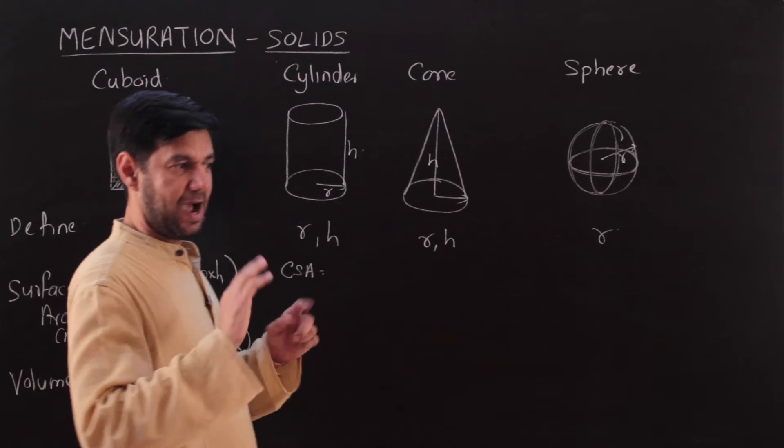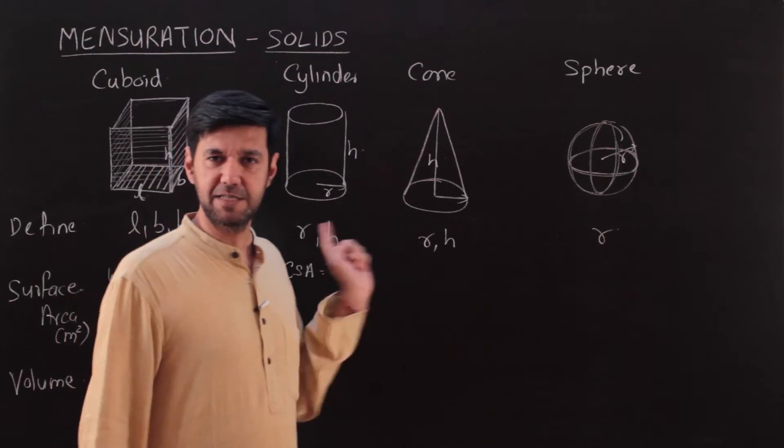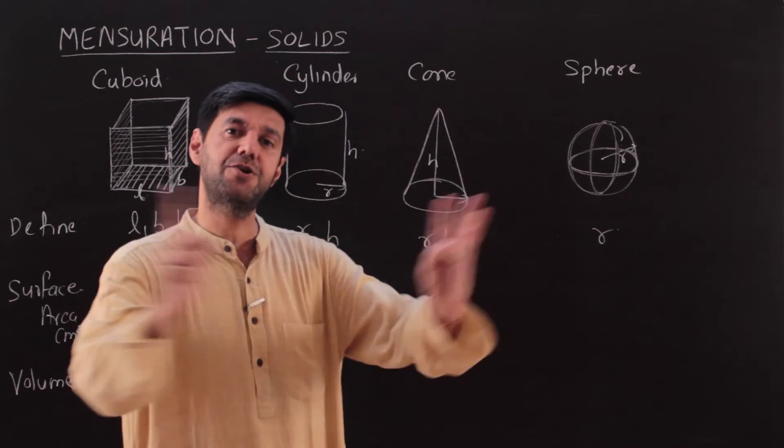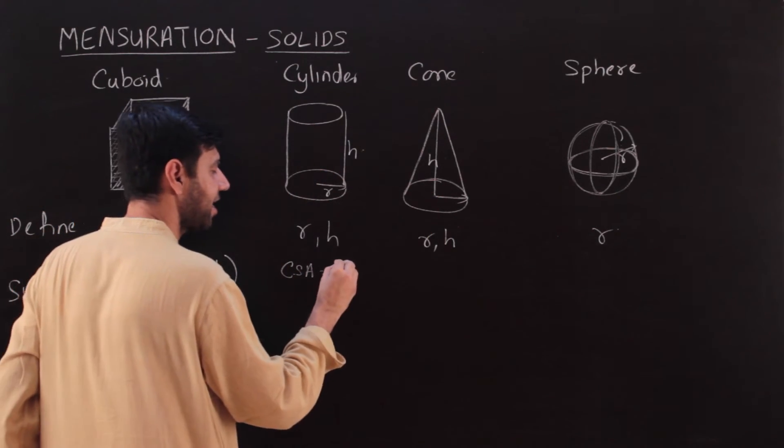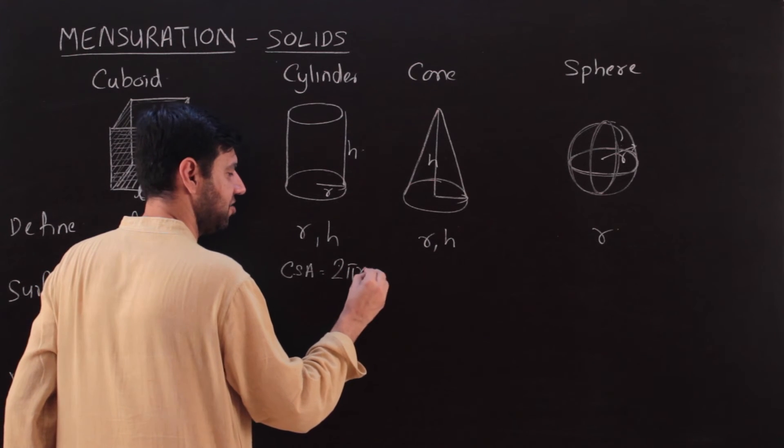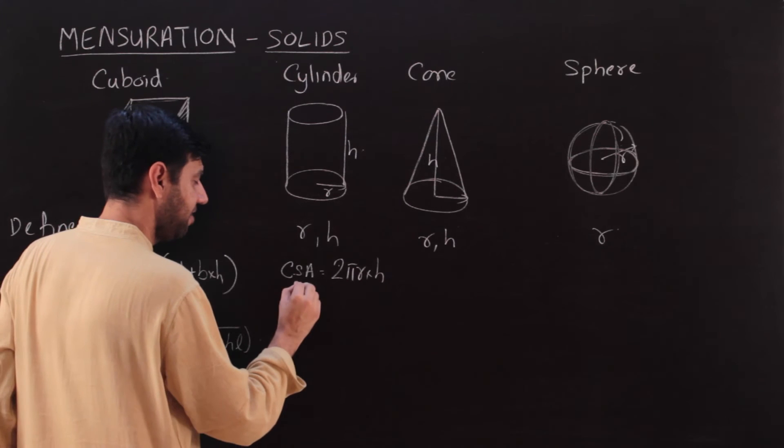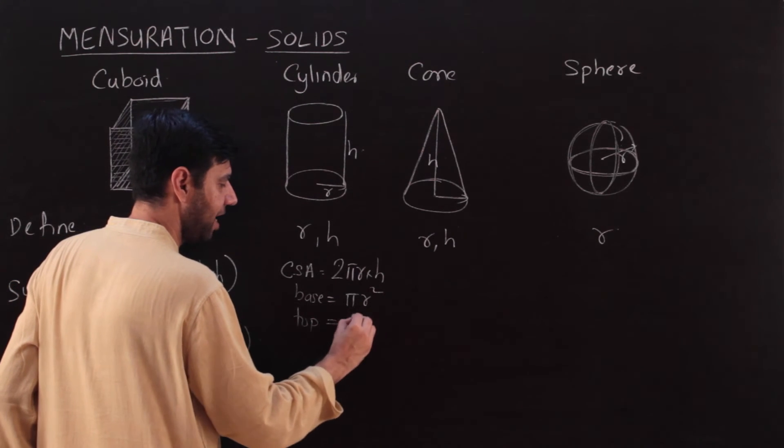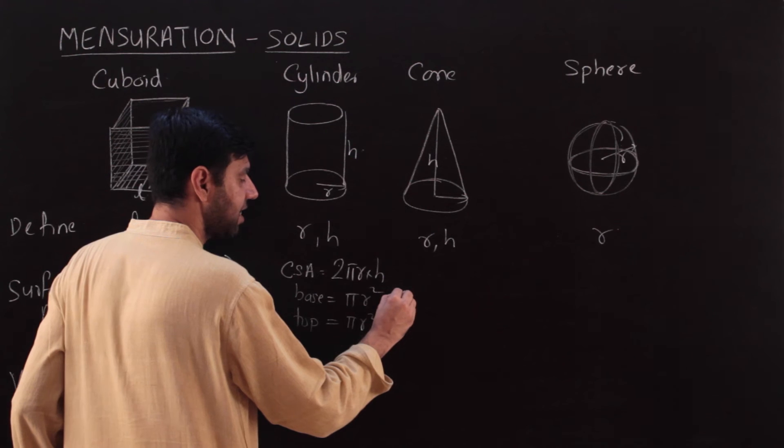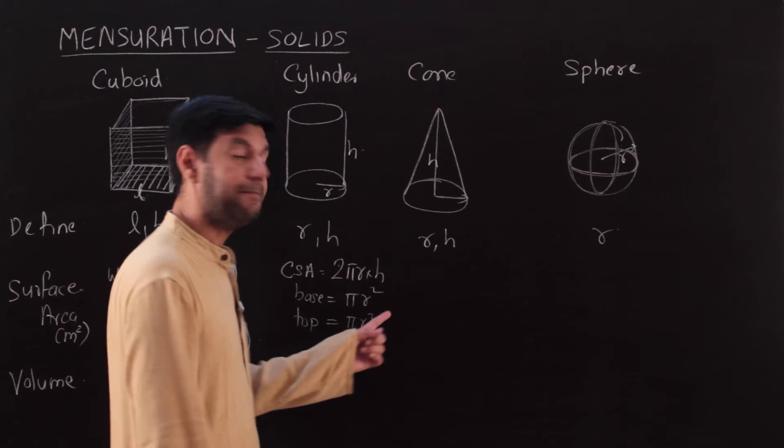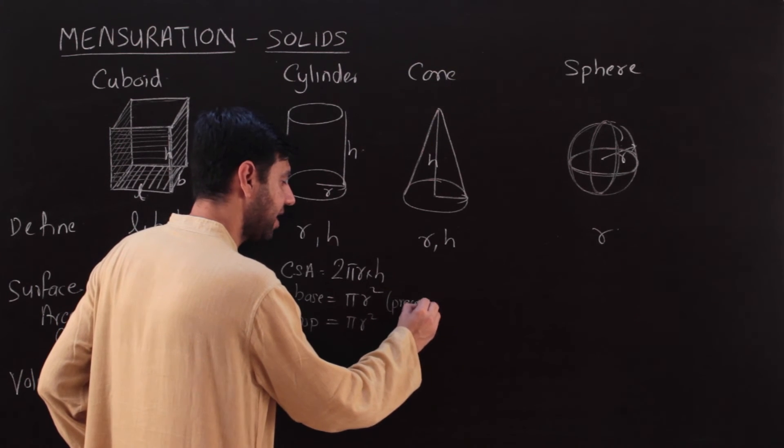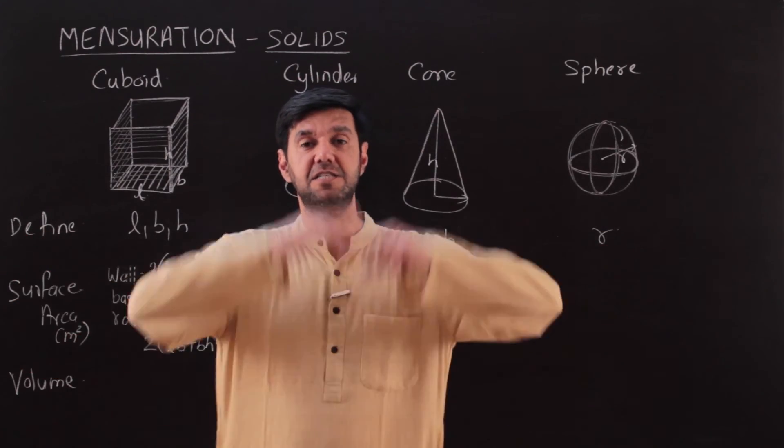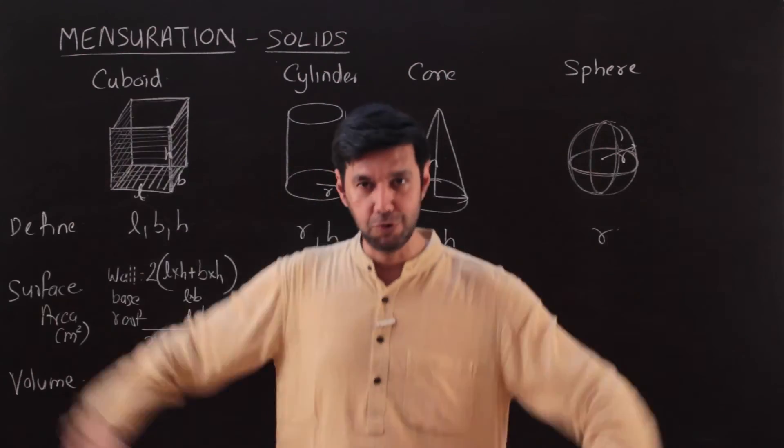Curved surface area is the equivalent of the walls. If I am in a circular room, I look around me. The walls are the curved surface area, and that area is nothing but 2πrh. If there is a base circle, the base is nothing but a circle, so that will be πr². If there is a top, it would be again πr².